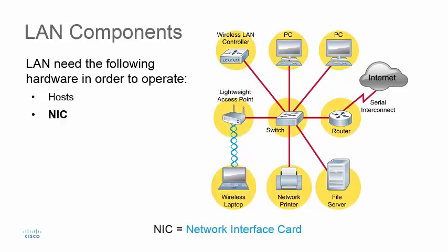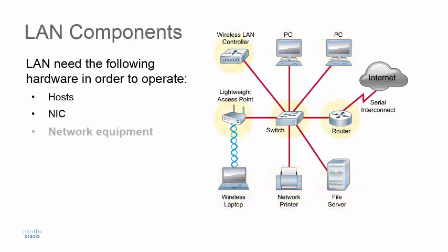Each user device needs a network interface card, known as NIC. This card transforms data into electronic signals which travel across the network. Each device with a NIC has its own MAC address. Devices need addresses so they can talk to each other and recognize each other. A MAC address is a unique number, just like your telephone number or your social security number.